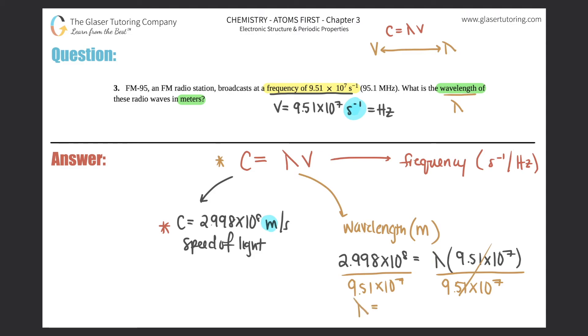Cancel that out. Wavelength equals, let's get out the calculator: 2.998 times 10 to the eighth divided by 9.51 times 10 to the seventh.